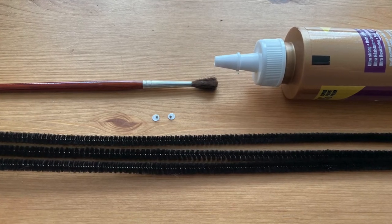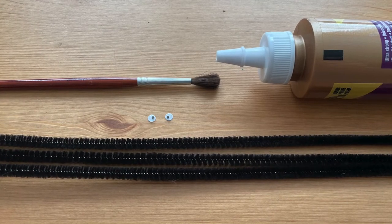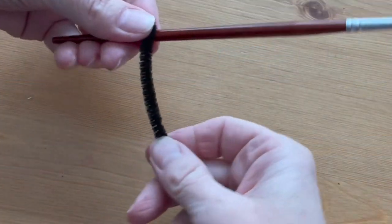For this project, you'll need three black pipe cleaners, a paintbrush with a skinny handle, googly eyes, and thick white craft glue.